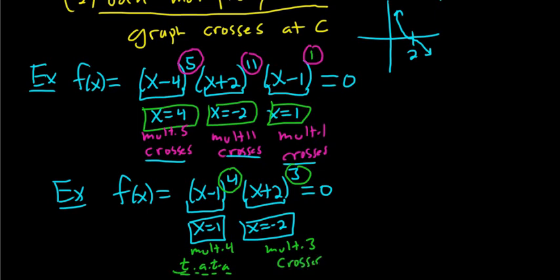I just abbreviated touches and turns around. Just being lazy. So whenever it's even, it touches and turns around. Whenever it's odd, it crosses. That's it.